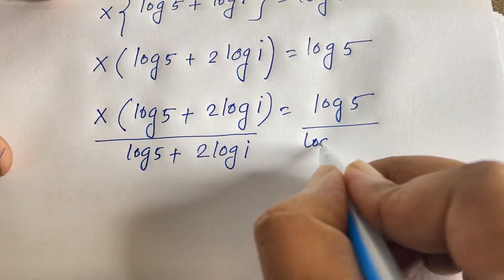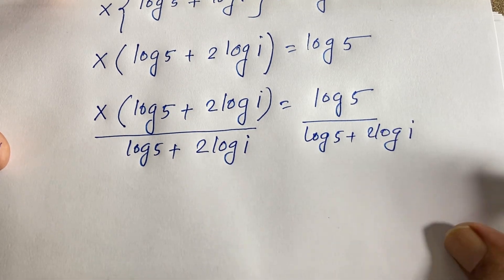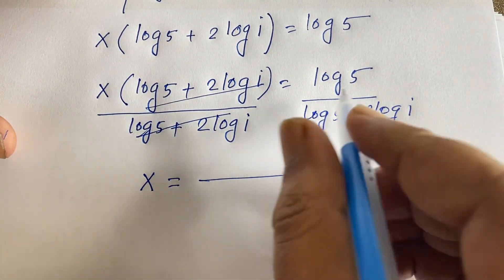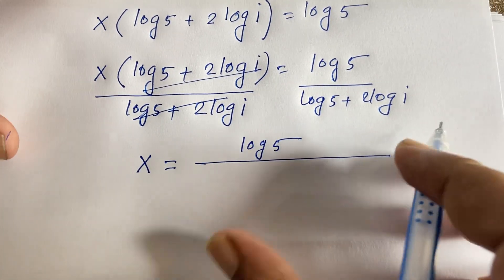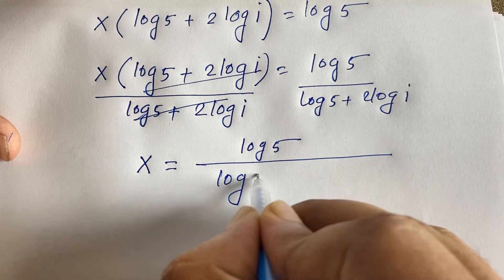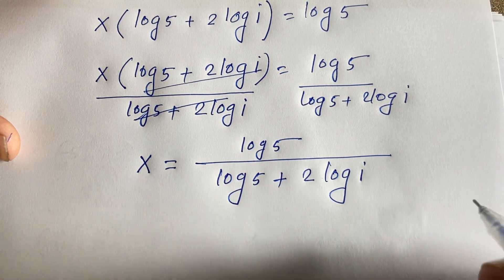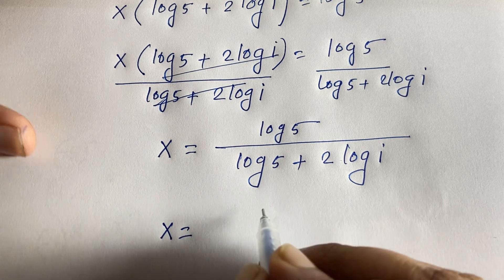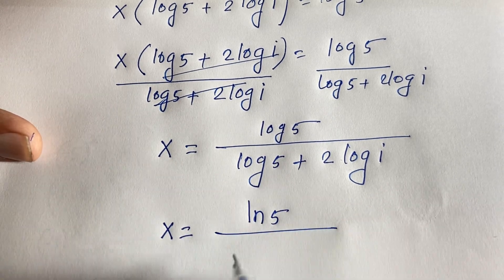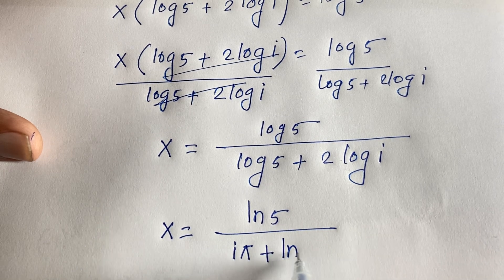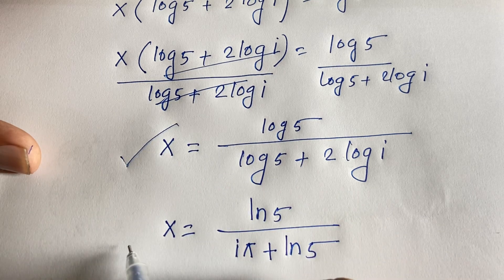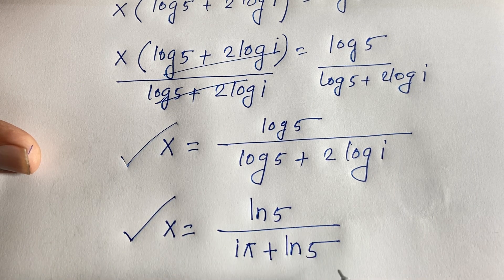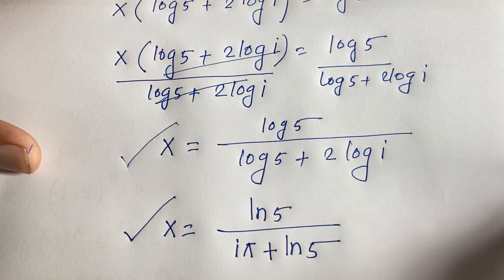Dividing both sides by (log5 + 2·log(i)), we find x = log5 / (log5 + 2·log(i)). This confirms our answer: x = ln5 / (iπ + ln5). Both methods give the same value of x. Thank you all — if you enjoyed this video, please subscribe to my channel for other interesting videos. Goodbye, take care.